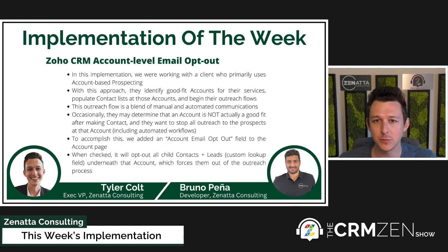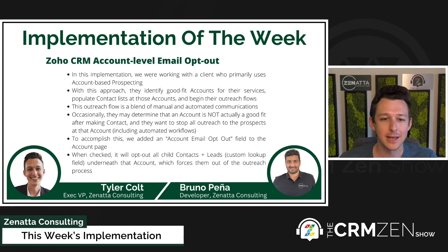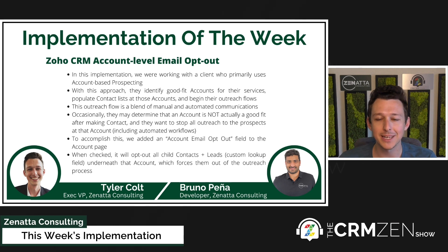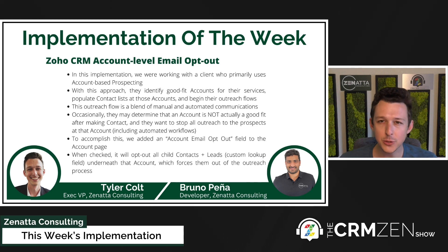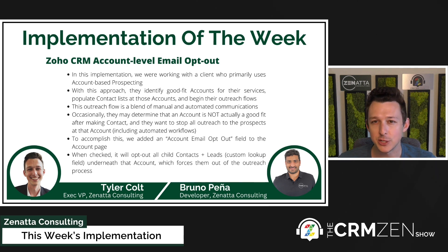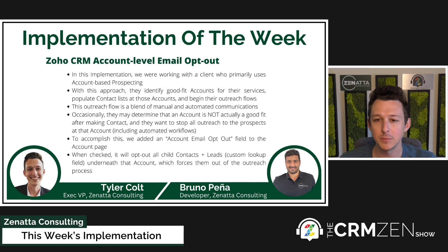It's a pretty simple implementation from a technical perspective. We added a field to the account for account-level email opt-out. When that is checked, it runs a script that will opt out any contacts and leads underneath that account. In this particular workflow, they do use leads that have an account lookup, which convert eventually based on engagement with that lead at an account.